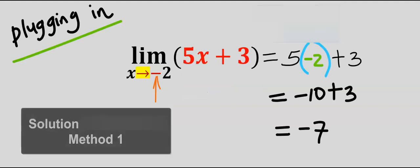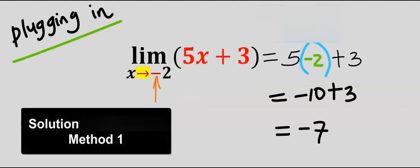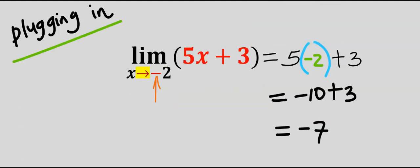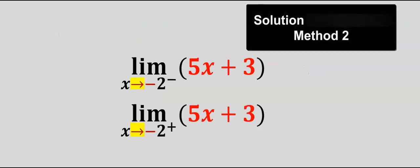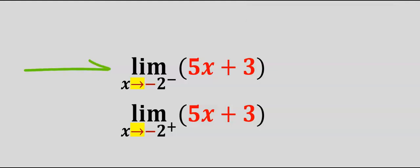Let's consider this question. This time around, this is now minus two. By plugging in or direct substitution, we are going to get minus seven. Subsequently, by using tables, we can approach the limit from the left or from the right.